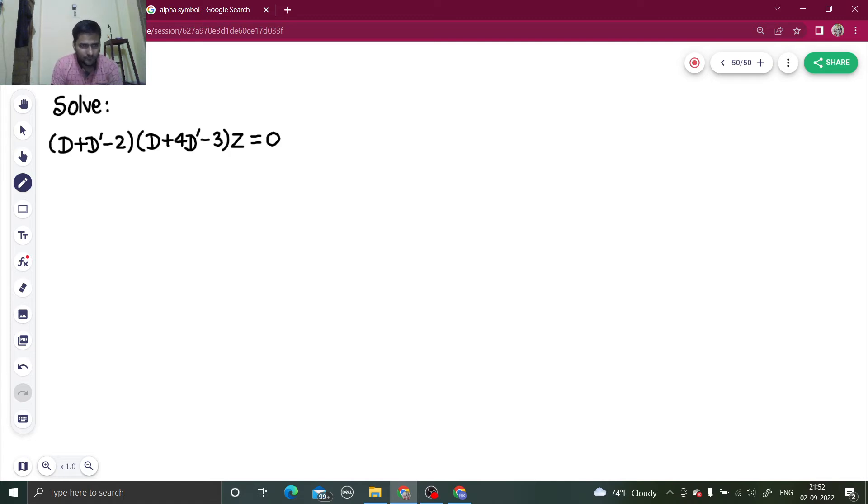As you can see two factors are there. First one is d plus d' minus 2. Second one is d plus 4d' minus 3. Factors will be like this: D minus md' minus a. You have to compare all the factors with this.